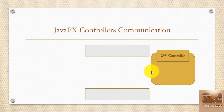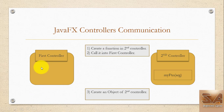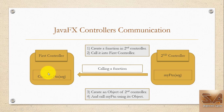In the second controller you have to create a function like 'myFunction' and call it from the first controller. To call it, you create an object of the second controller and call myFunction from the first controller by using that object of the second controller.